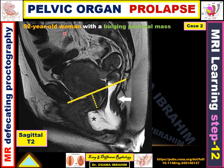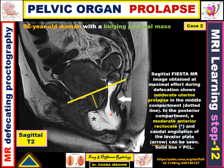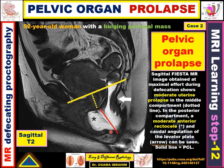Case two: a 52-year-old woman complaining of a bulging perineal mass. This is a sagittal T2-weighted image showing the uterus and rectum. The pubococcygeal line is drawn, and the reference point from the anterior cervix shows prolapse — the cervix appears below the PCL. The anorectal junction is also at a large distance below the line. This is considered prolapse of the middle and posterior compartments. There is also anterior rectocele — a portion of the rectum bulging anteriorly. Diagnosis: uterine prolapse, and anterior rectocele.